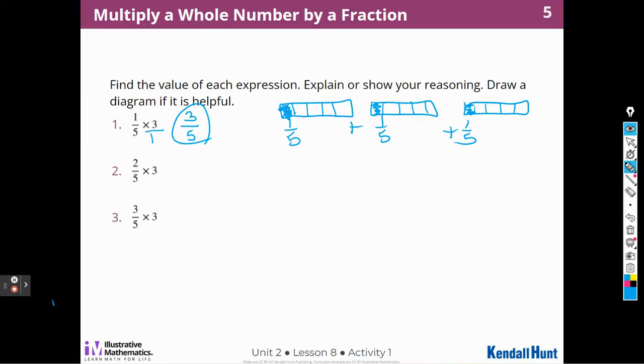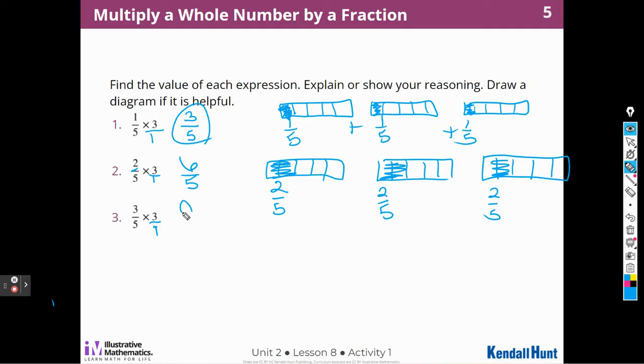In the second one, I can do, again, the same thing. 2 times 3 is 6, and we're going to put that over 1. 5 times 1 is 5. And in this one, I can represent that by doing the same thing, drawing three whole diagrams. But this time, I'm going to shade in two-fifths, two-fifths three times. So that's two-fifths plus two-fifths plus two-fifths. So what does that equal? Six-fifths. I also notice that two-fifths is double one-fifth. So I just doubled the numerator, right? Three doubled is six.